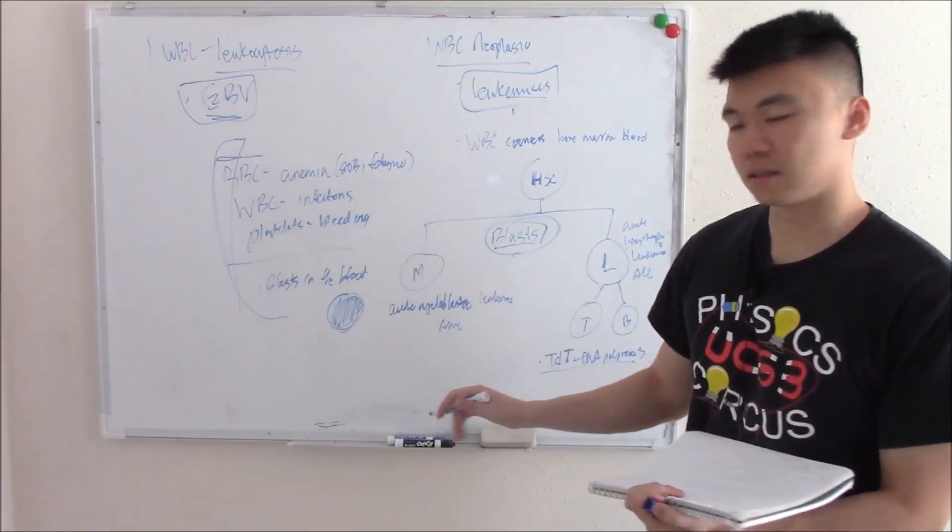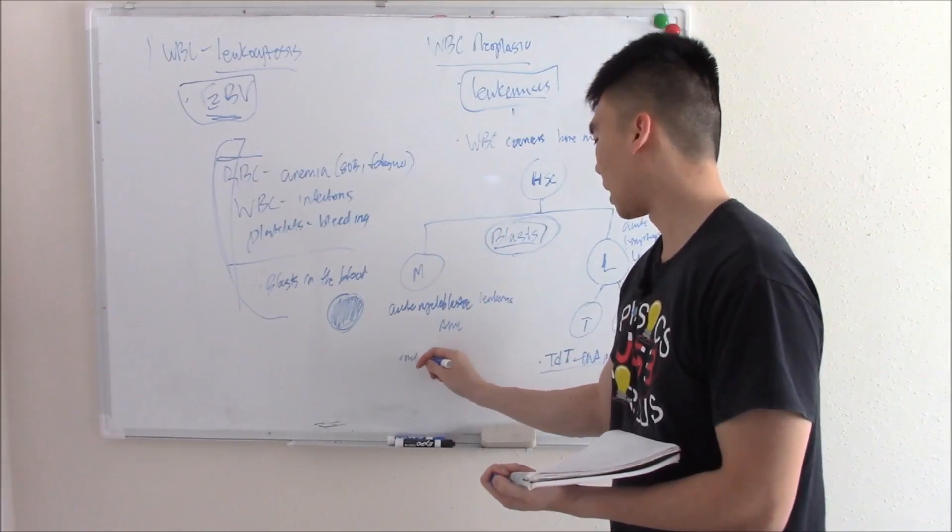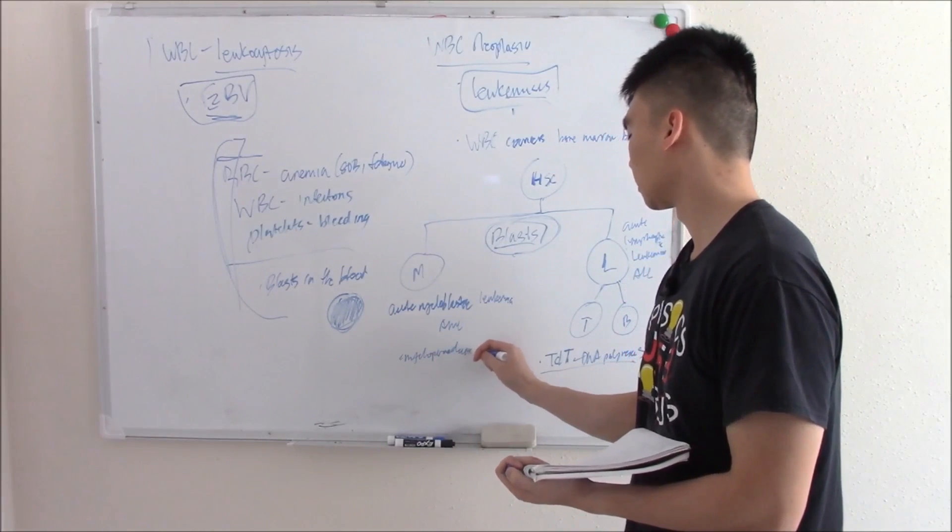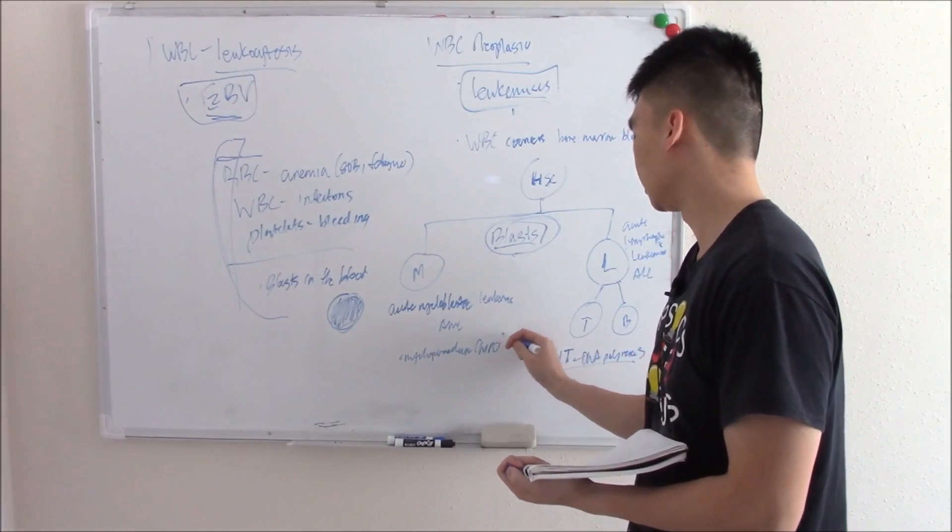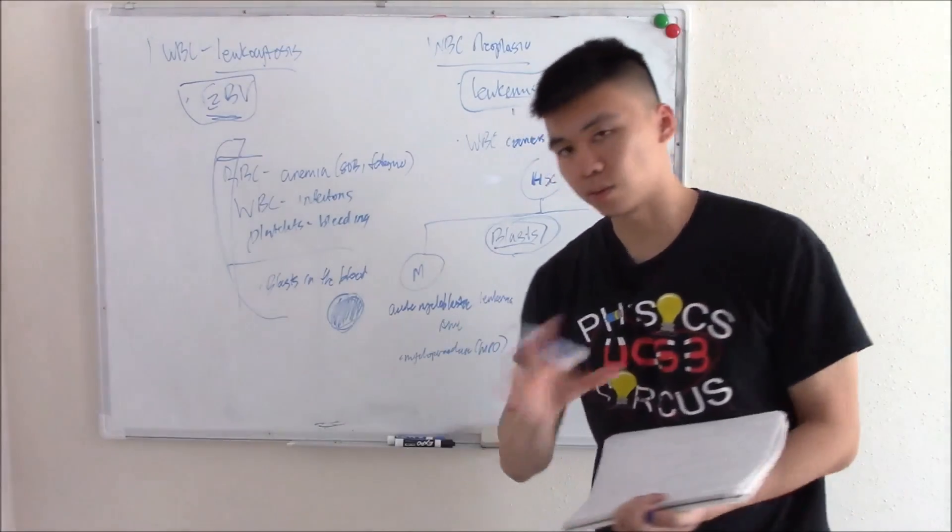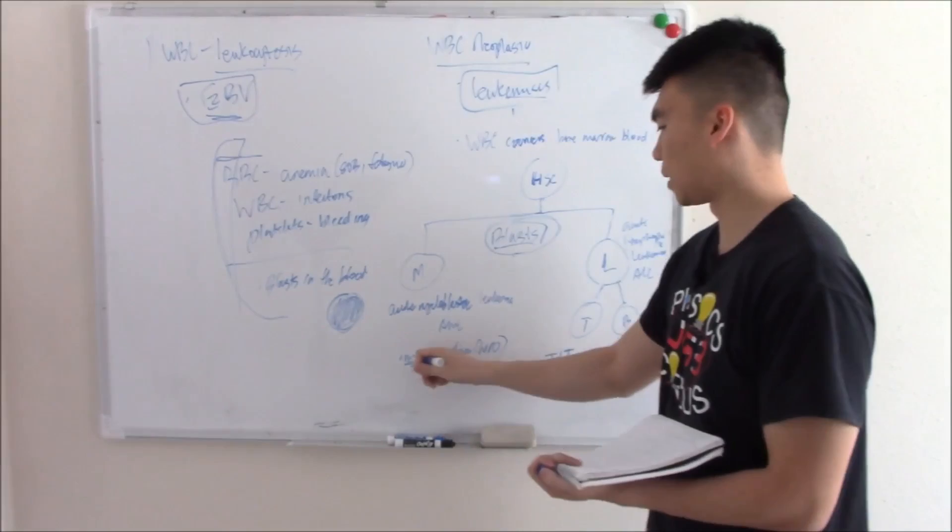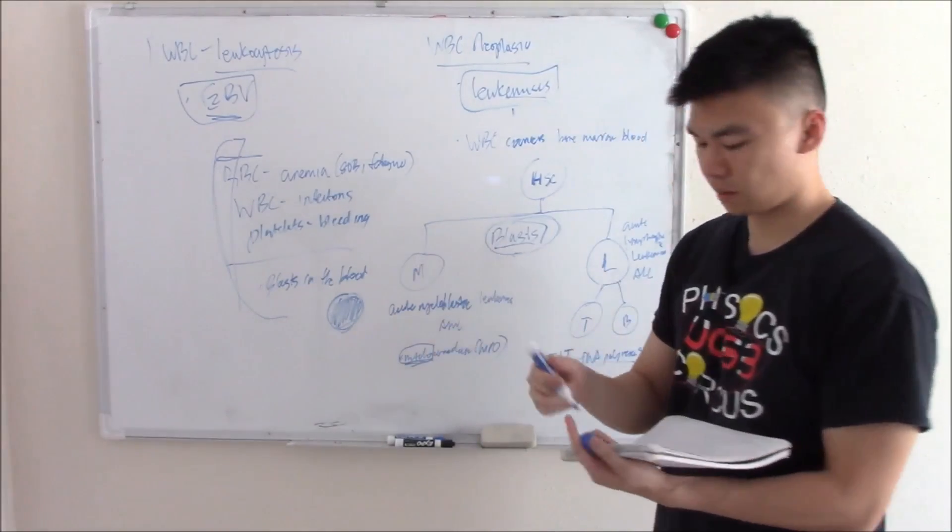Myeloblasts on the other hand have an enzyme called myeloperoxidase or MPO. Myeloperoxidase, with a name like that, it better be specific to myeloblasts and it is.